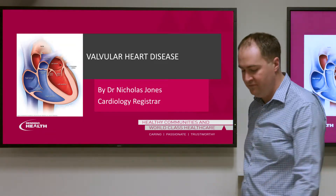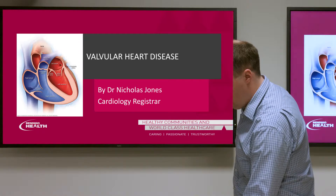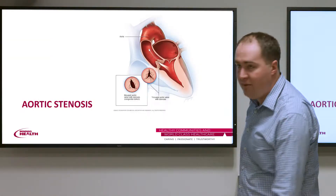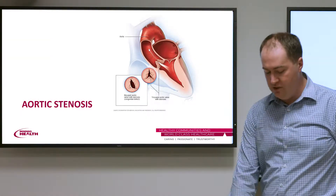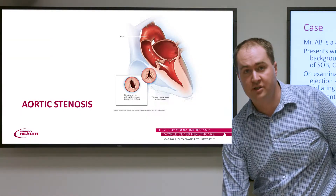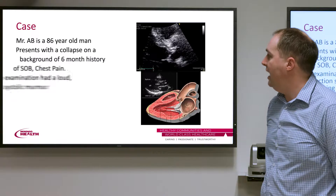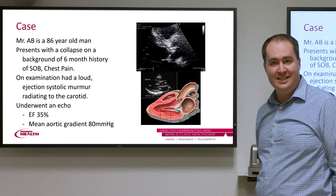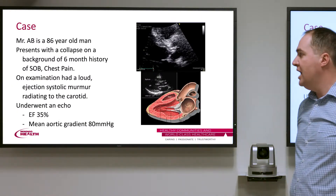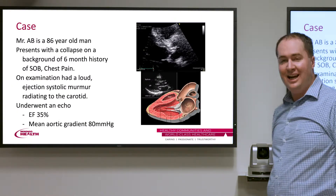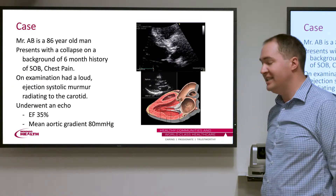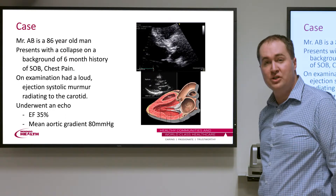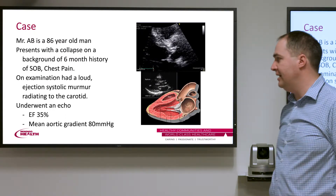We'll start with the most common valvular lesion, which is aortic stenosis. The first case is that of an 86-year-old gentleman who presents with collapse, a six-month history of shortness of breath, and chest pain.